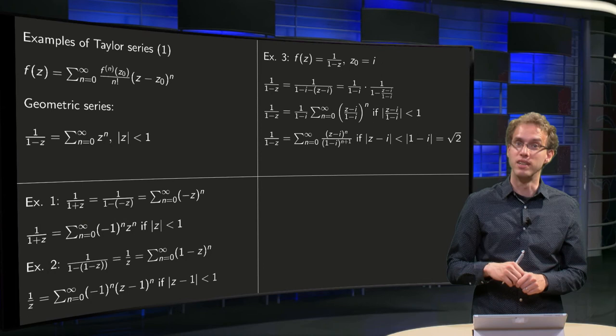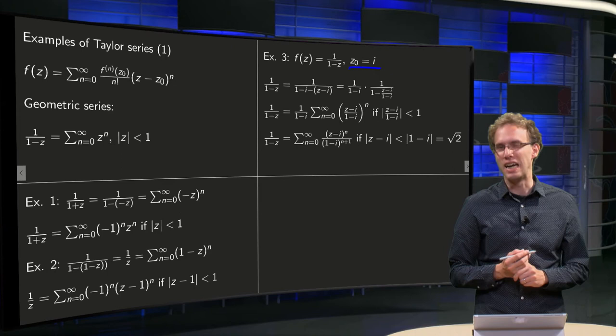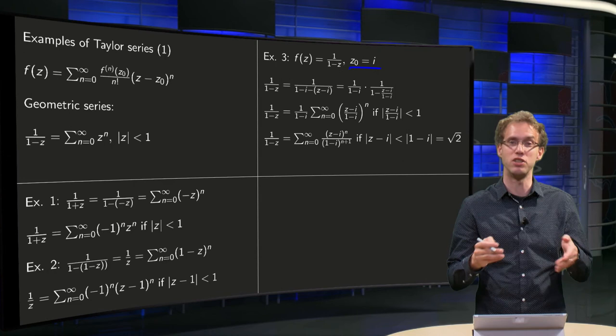So, next example. Take again some other center point. f(z) = 1/(1-z), but now we want a center point z0 = i. It's a bit annoying. If we would take a center point z0 = 0, then we know what it is, it's just sum n from 0 to infinity z^n.